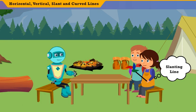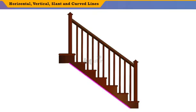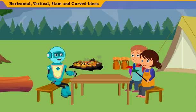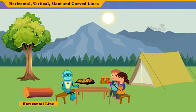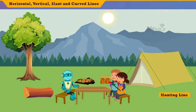Can you name an object that is in a slanting position? A staircase is neither vertical nor horizontal. It is slanting. Wow Bella, it looks like you understood the three types of straight lines very well. Now look around and find objects with horizontal, vertical, and slanted lines. The firewood over there is kept in a horizontal position. The tree is in a vertical position. The string that is tied to the tent is in a slanting position.